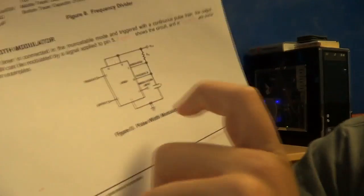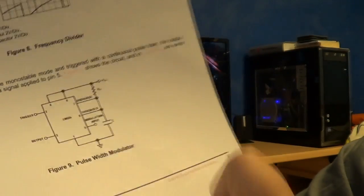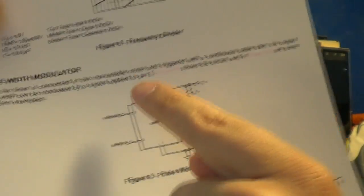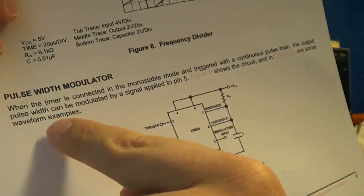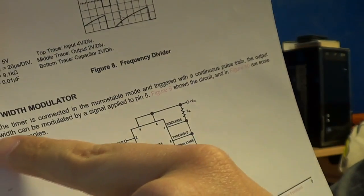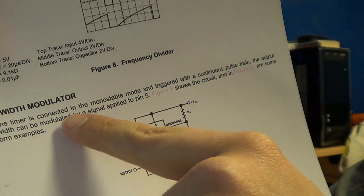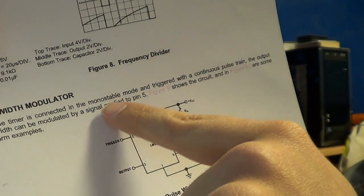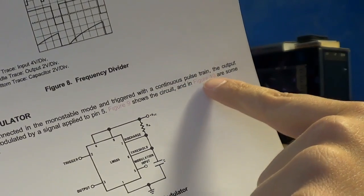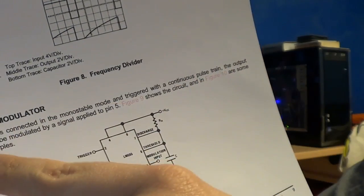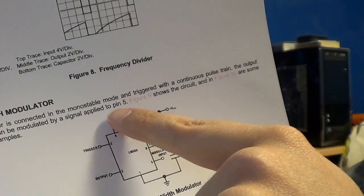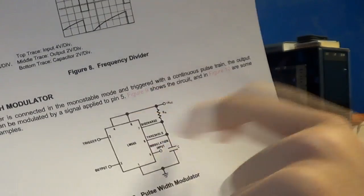As you can see in this schematic, it has a trigger, because somewhere here it says that when the timer is connected in monostable mode and triggered with a continuous pulse train, the output pulse width can be modulated by a signal applied to pin 5.